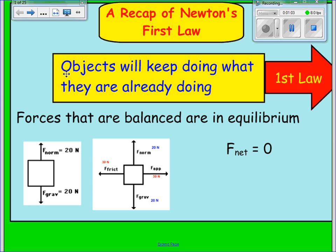In the box on the right, there are not only y-forces but also x-forces. The y-forces balance each other out — force gravity and force normal are both 20 in opposite directions. The x-forces also cancel each other out: force friction is 30 newtons and force applied is 30 newtons. Those cancel out as well, so that object is also in equilibrium. When talking about net force, we analyze the net force in the y-direction and the x-direction separately.